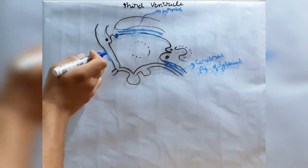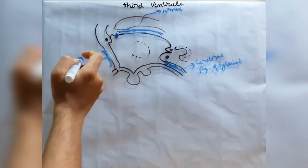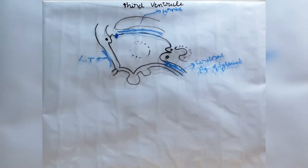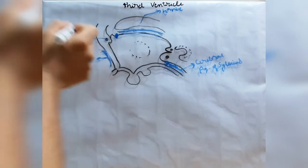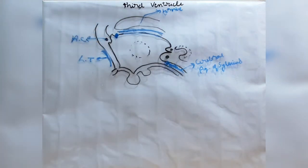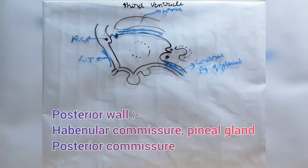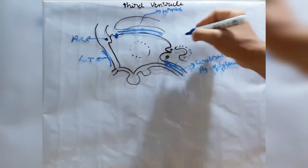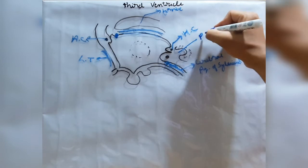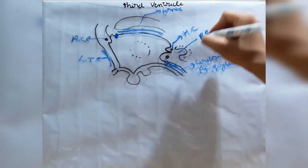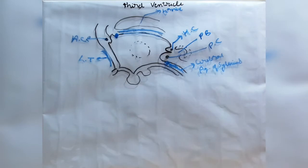This structure is the lamina terminalis and this dark structure is the anterior commissure. So the anterior wall is formed by the columns of fornix, anterior commissure, and lamina terminalis. The posterior wall is formed by the habenular commissure, pineal gland, and posterior commissure.